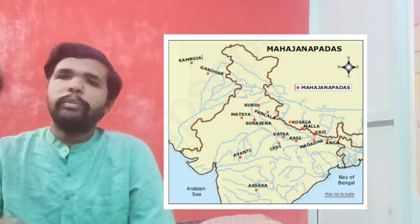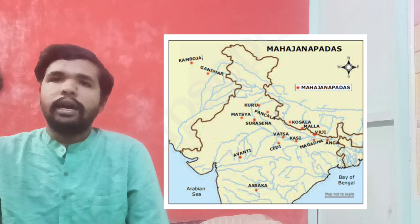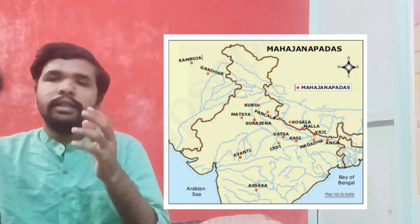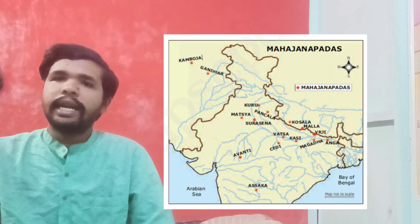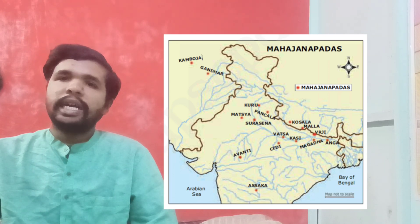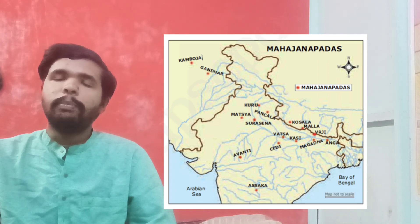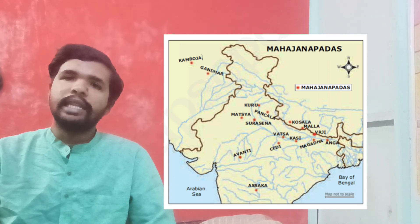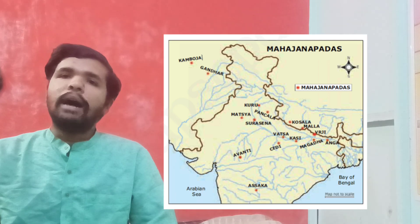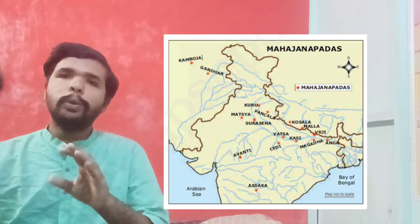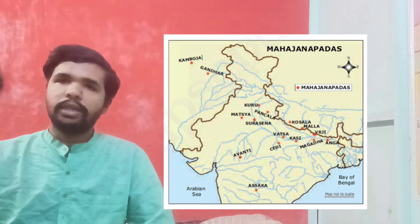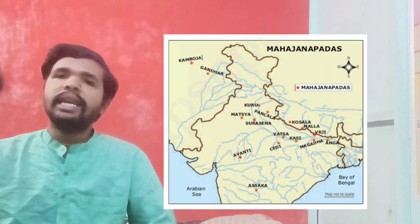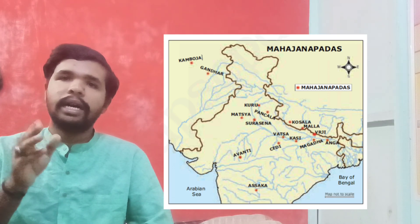The next important Mahajanapada is Gandhara. Gandhara is mentioned in various ancient sources. Its capital is Taxila. Then there is Ashwaka, whose capital is Kotali. Ashwaka is one of the most important Mahajanapadas. The next is Kamboja, located in the Punjab region. The most important Mahajanapada is Magadha. Magadha's capital is Rajagriha, and the Haryanka dynasty is associated with Magadha.